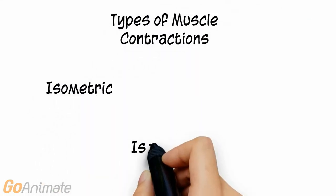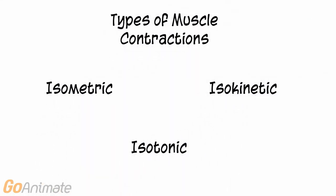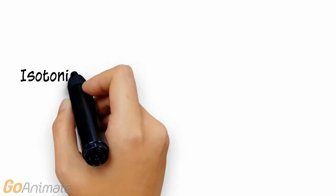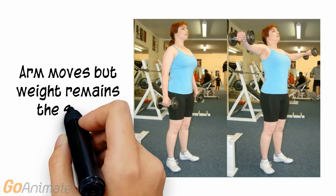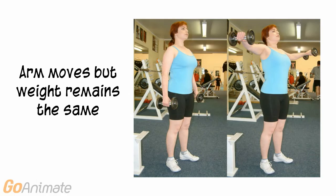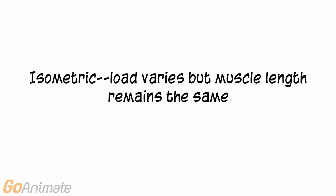There are three types of muscle contractions: isometric, isotonic, and isokinetic. In an isotonic contraction, the load remains the same but the muscle length changes. This exercise is an example of an isotonic contraction. The subject can move the weight but the weight does not change.